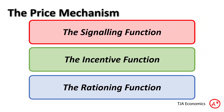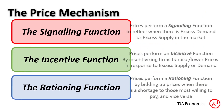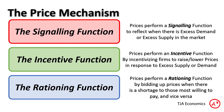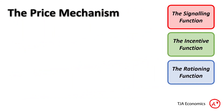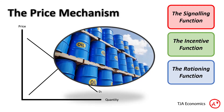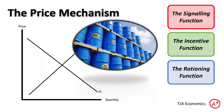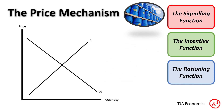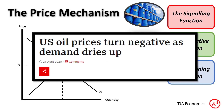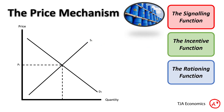So let's do a slightly different example then. Again, we can look at our signalling, incentive, and rationing functions working in the price mechanism in another example. You may all remember that at the start of 2020, the price of oil went crazy. If we look at this headline, we can see that the price of oil in the US actually went negative — there was so little demand that the price of oil plummeted.